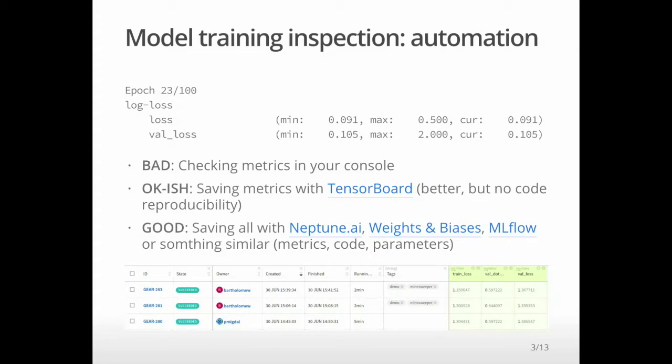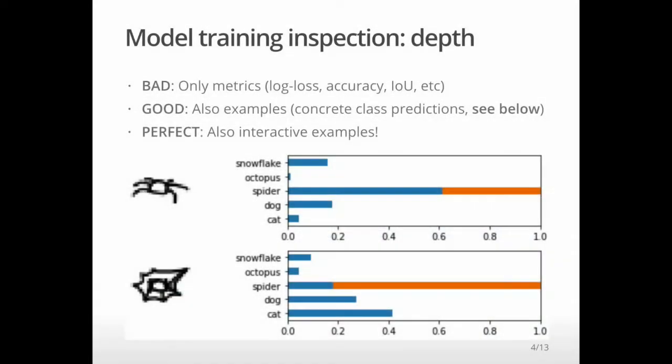For example, Neptune, Weights and Biases, or MLflow. But it's not the only axis with respect to which we can look at model training inspection. The other is depth. For example, you can only look at metrics, but I don't think it's enough. Sometimes you can miss that it classifies or misclassifies some obvious examples.